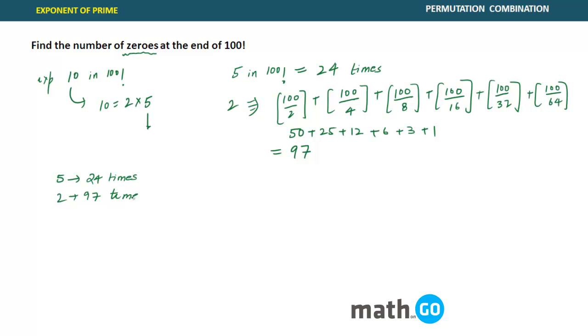So that means 5 is there for 24 times, and 2 will be there for 97 times. Obviously, how many times 10 will be obtained? Obviously the lower value. So 10 will be for 24 times. So that means how many zeros at the end? 24 zeros or zeros at the end would be 24. This is the answer.